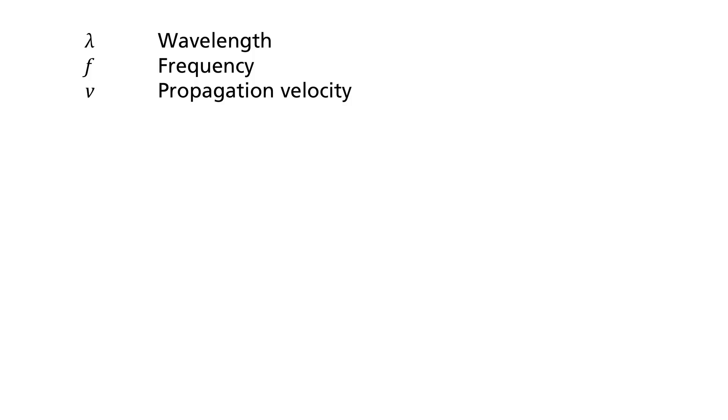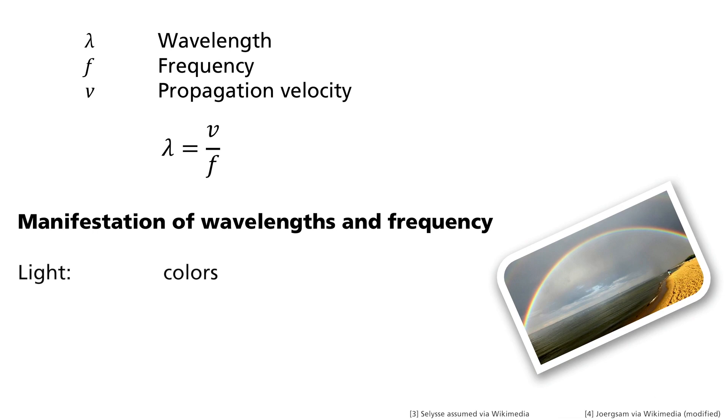The wavelengths and frequency are linked via the propagation velocity. The rule is as follows. The wavelength lambda is equal to the propagation velocity v divided by the frequency f. In the seismogram, for example, the different types of body waves have different oscillation frequencies. In the case of light waves, we perceive different wavelengths as colors. Acoustic waves for different frequencies are heard as pitches.